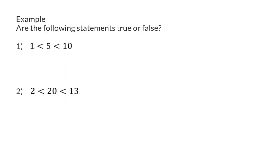Example: are the following statements true or false? Here we now make use of two inequality signs. Firstly, it says that 1 is smaller than 5, and this is true. Next, it says that 1 and 5 are both smaller than 10, and this is also true, so the whole statement is true.